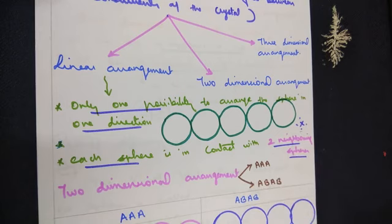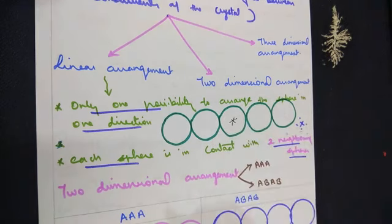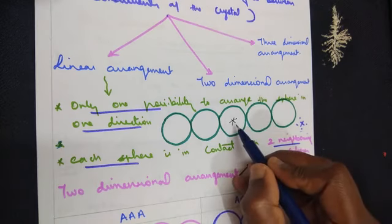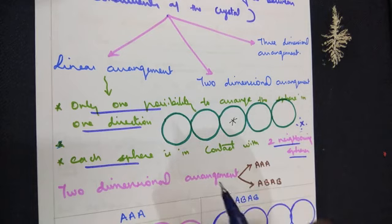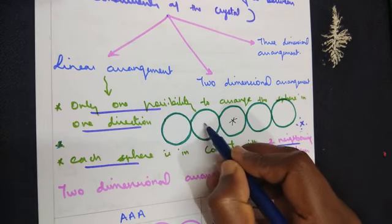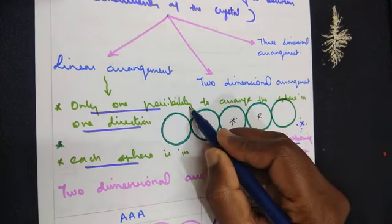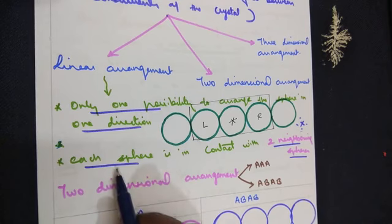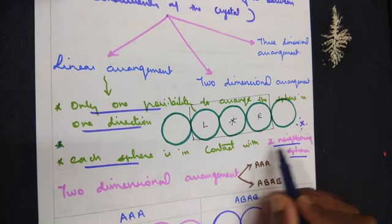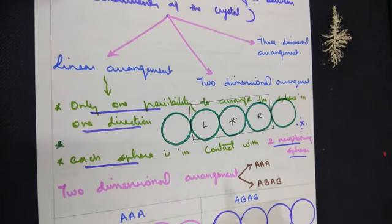Now suppose this is the sphere of interest. If you are asked to calculate the number of neighbors for this particular sphere — one on the left, one on the right — so together there are two neighbors. Each sphere is in contact with two neighboring spheres in terms of linear arrangement.